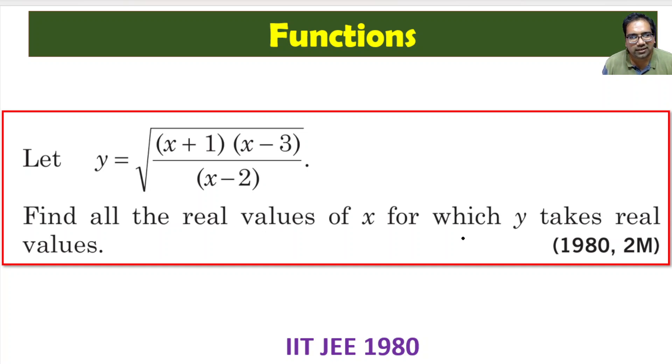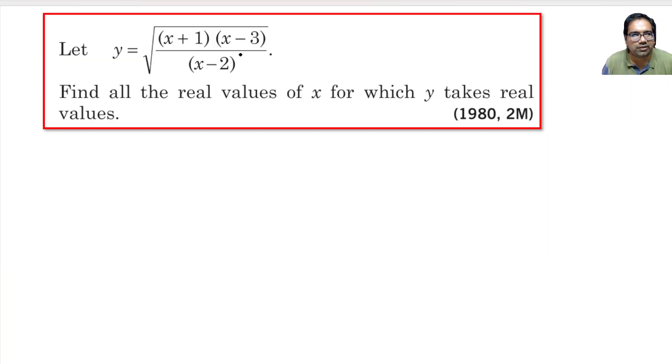All real values of x for which y takes real values. That means y is not complex, x is not complex. What does that mean? Whatever is there within this square root should be greater than or equal to 0. (x + 1)(x - 3) divided by (x - 2) should be greater than or equal to 0, and at the same time x cannot be equal to 2 because that is in the denominator.